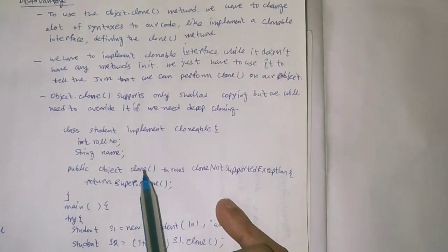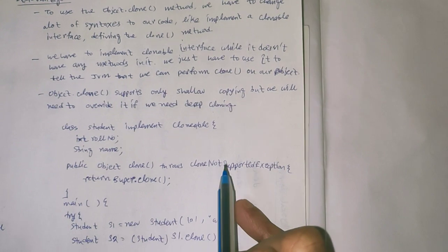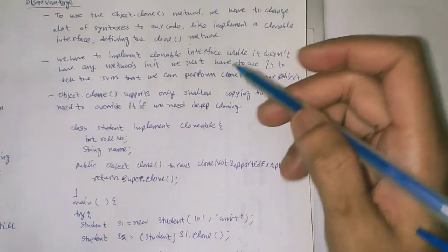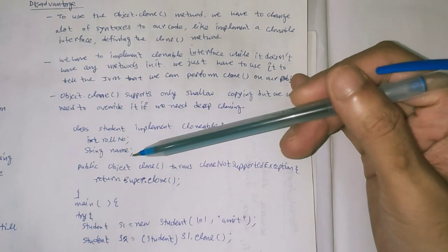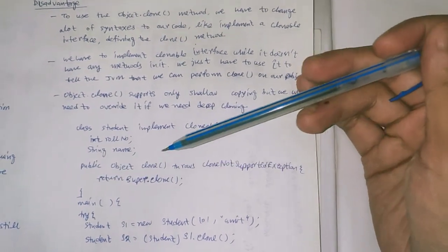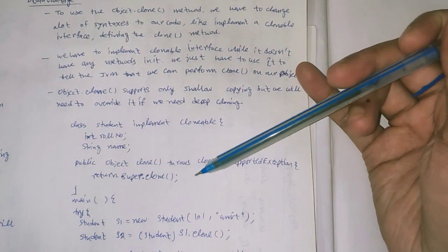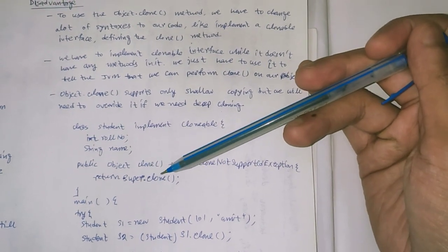Public object clone method throws CloneNotSupportedException. This is the object clone method and throws CloneNotSupportedException. Return super.clone.